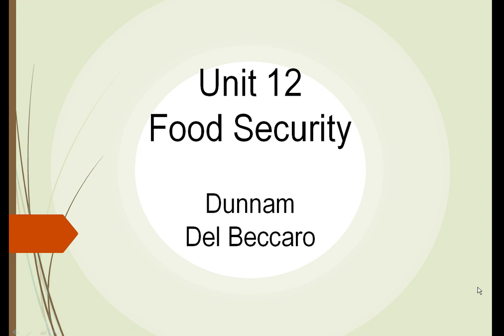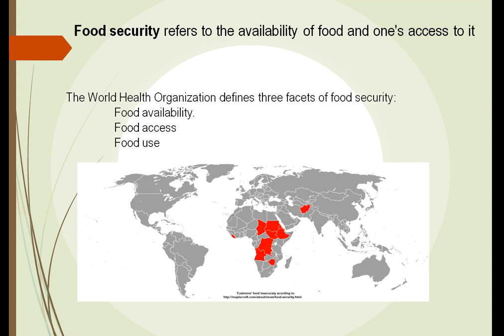This is SAT 105, Unit 12: Food Security. Food security refers to the availability of food and one's access to it. The World Health Organization defines three facets of this: the availability, the access, and the use.